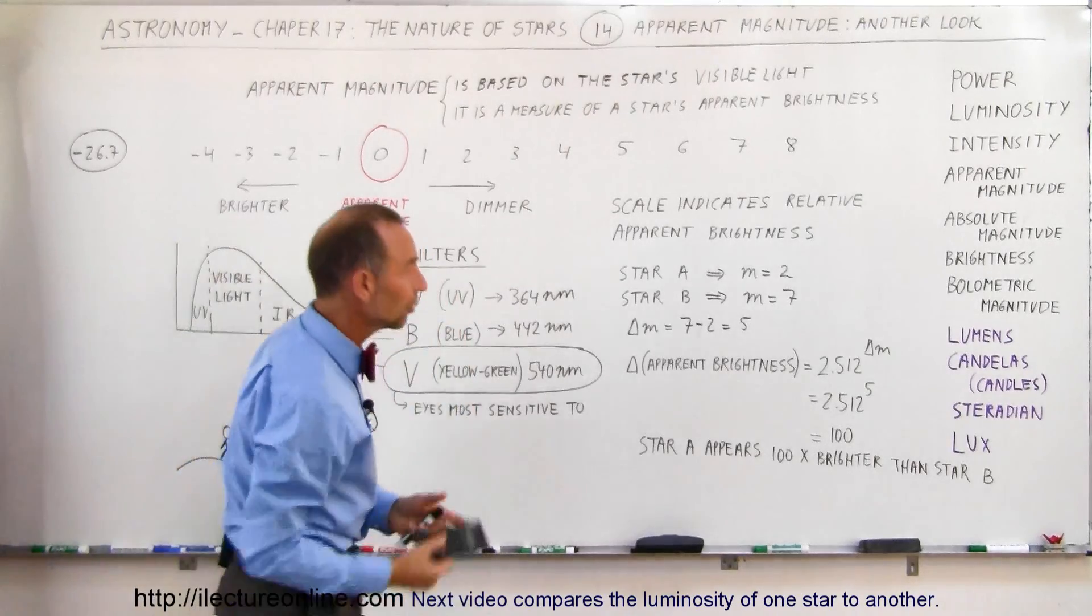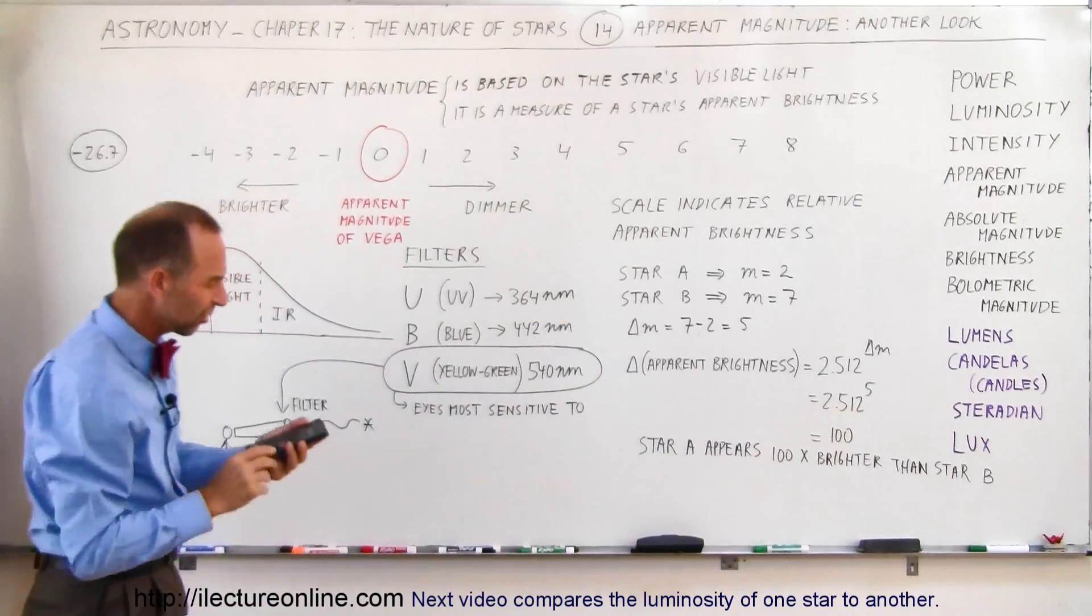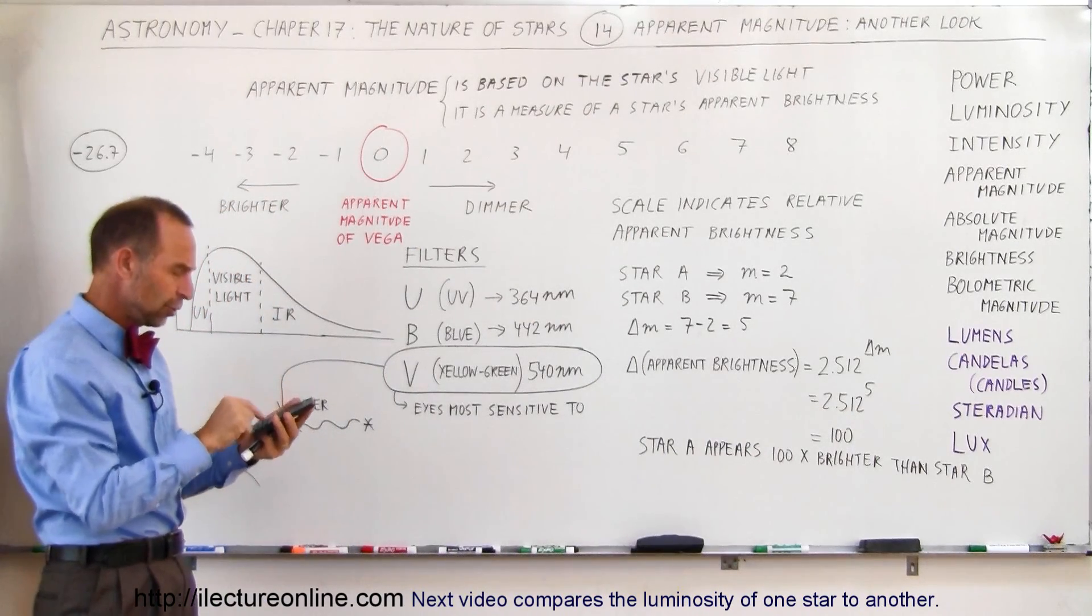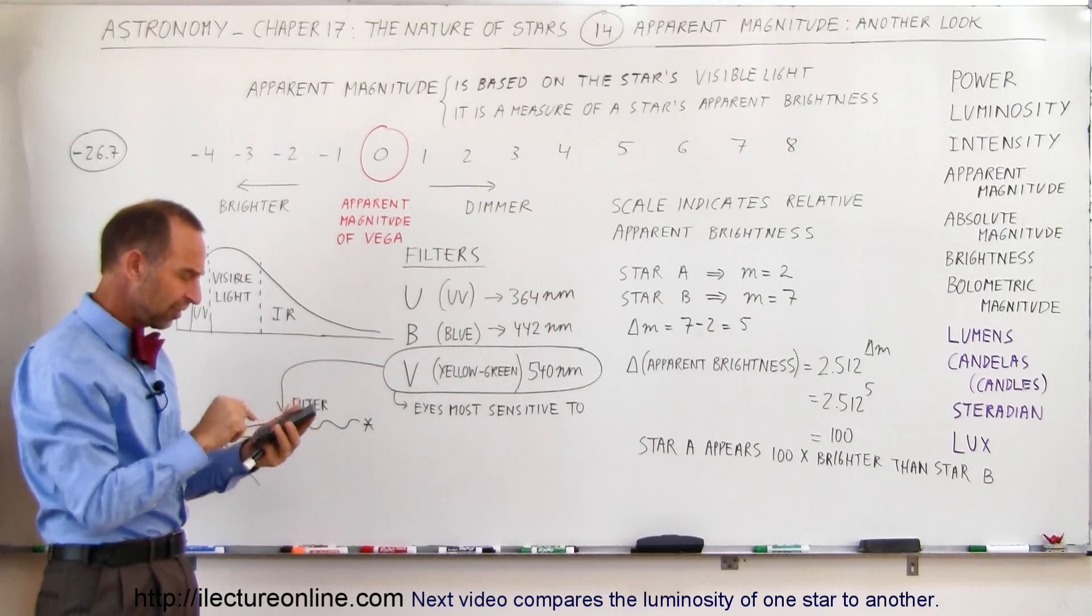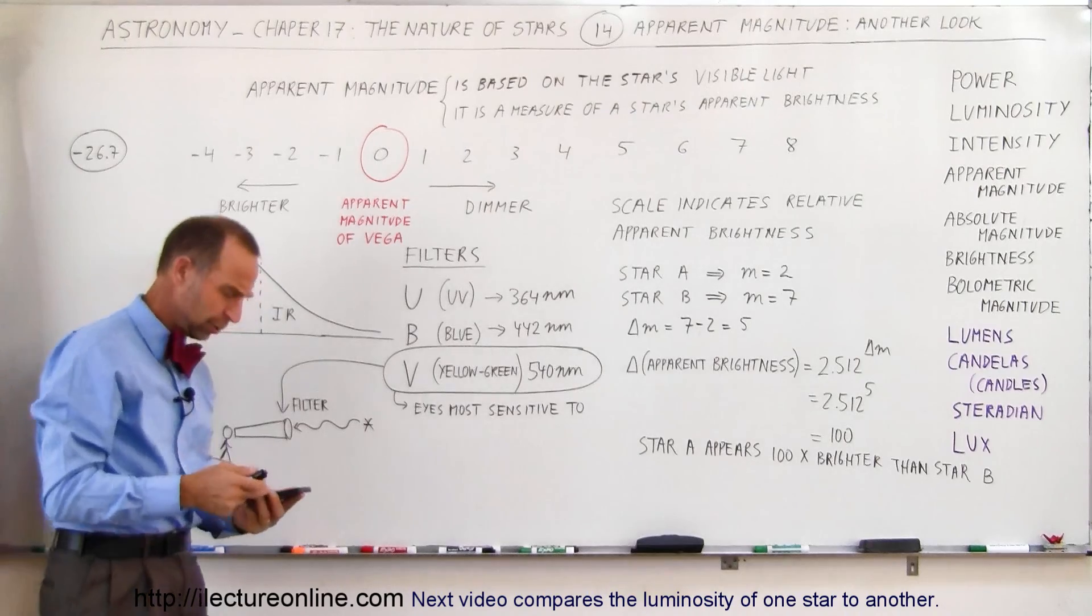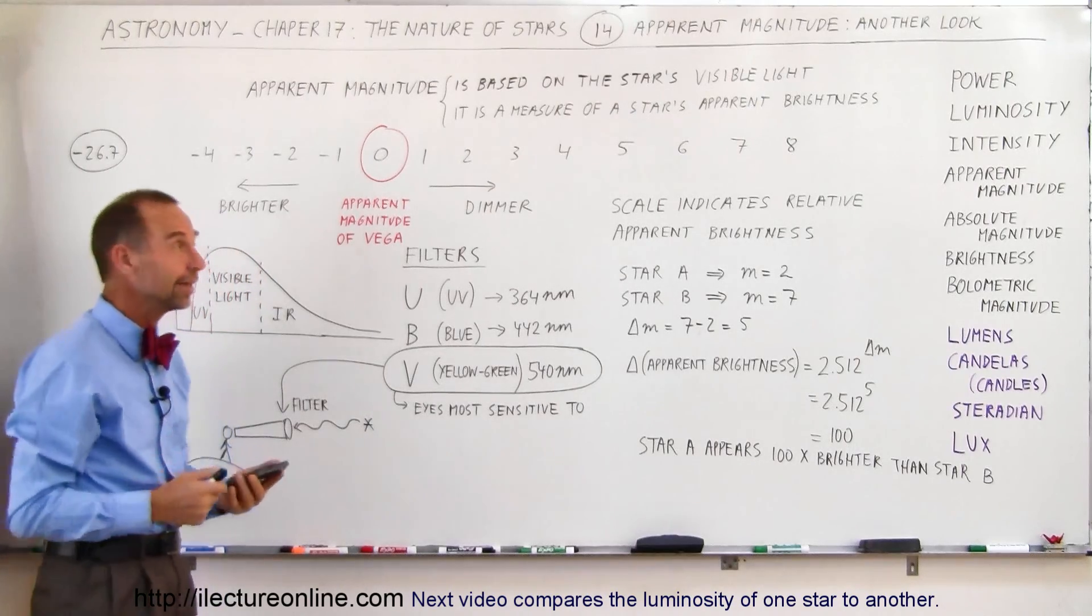And if we then take the number 2.512 and raise it to 26.7, so we have 2.512 raised to the 26.7, we get a really big number, 4.79 times 10 to the 10th.